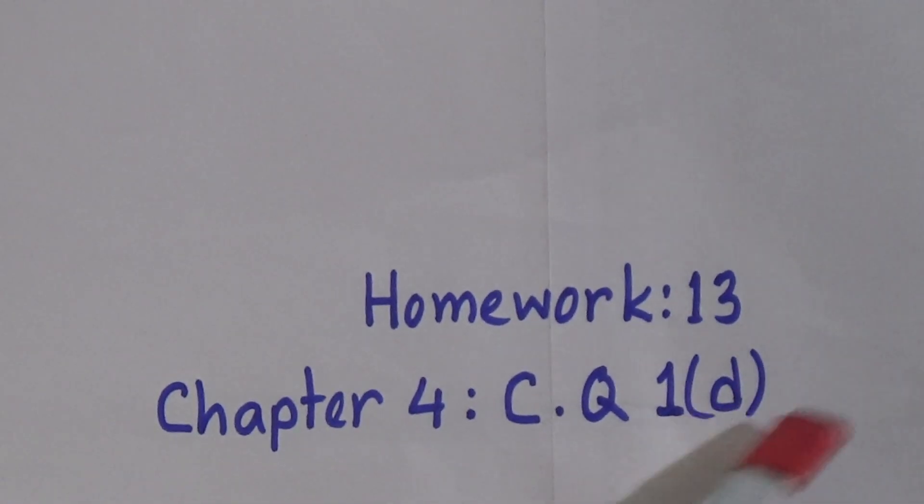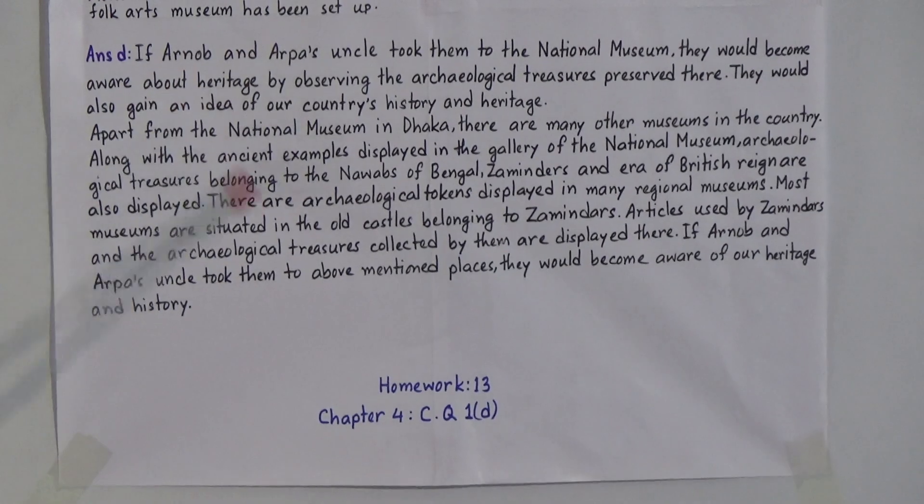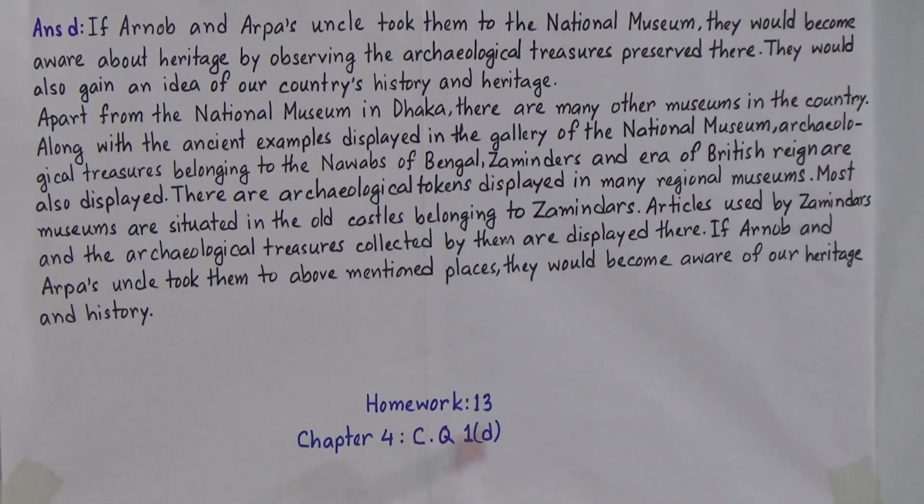Dear students, there is a homework — this is homework number 13. You will write the answer of Question D as your homework. From the creative question answer, you will write the answer of D: Analyze where they can realize the values of tradition as you have read in the text. You can take the help of this sample question answer. All of you will do your homework and submit it on every Sunday within 8 am to 4 pm. It is very important because your SBA, CT, and grades will be given on the basis of the submission of your homework.